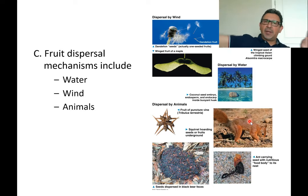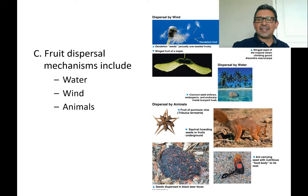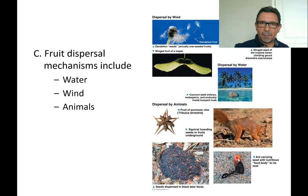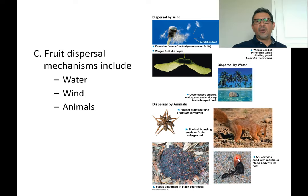Animals like squirrels carry nuts or acorns in their mouths and stash them in other places for storage. Ants also carry seeds to their underground colonies as a food reserve for winter when seeds are not available.